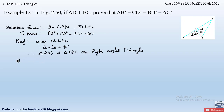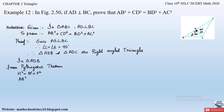Now let us consider triangle ADB and apply the Pythagoras theorem. From Pythagoras theorem: hypotenuse² = base² + perpendicular². The hypotenuse is AB (side opposite the 90° angle), so AB² = BD² + AD². Let this be equation 1.